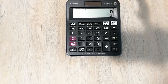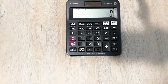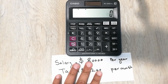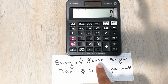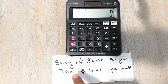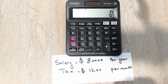Hello guys, today I am going to show you how to find out the tax rate on your calculator. It's very simple. For example, you are working in some company and your company is paying some amount of your salary as a tax. So how can you find out the tax rate? Let's say your salary is eighty thousand dollars per year and the tax you are paying is twelve hundred dollars per month.